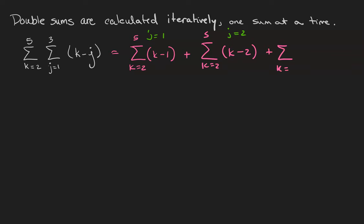Once again, we do the single sums individually now. 2 minus 1 is 1. 3 minus 1 is 2, 4 minus 1 is 3, 5 minus 1 is 4.